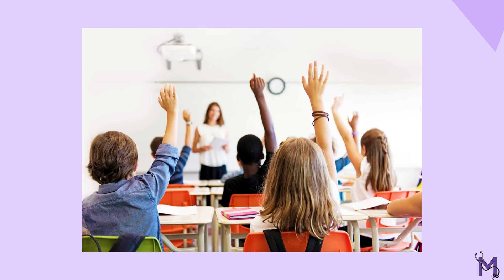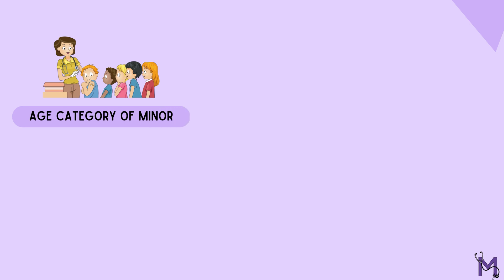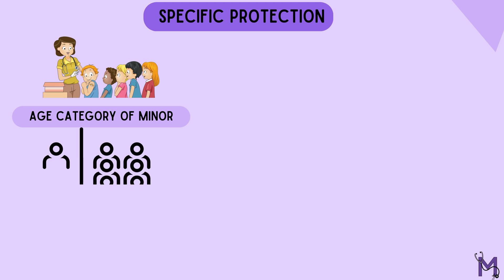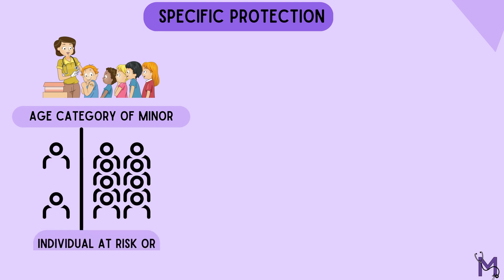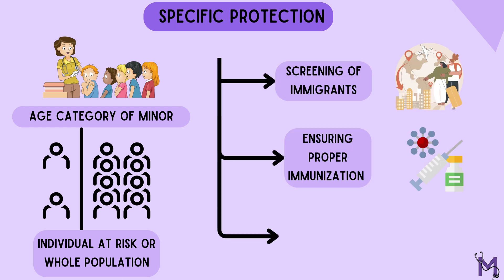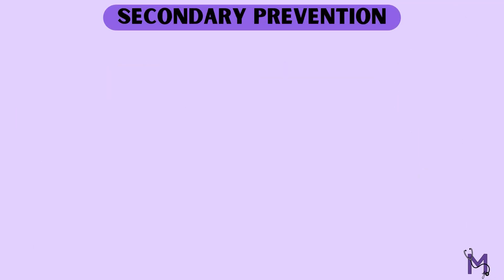In our PHD postings, we have been to multiple screening camps. These are done for a specific group of individuals — for example, while screening in schools, we provide care to those who fall in the age category of minors. This is known as specific protection. Specific protection could be for a whole population or only for individuals at risk, and could include screening of immigrants, ensuring proper immunizations, and defluoridation of water.